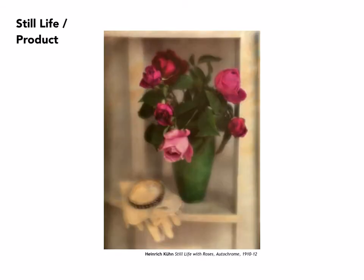This is by Heinrich Kühn, and this is made in a process called autochrome, which actually used small pieces of glass on the emulsion and created a color image. The glass was in different colors and allowed different wavelengths of light to strike the emulsion differently. As a result, you ended up with a color image — very soft, very almost impressionistic, and yet it's clearly a photograph.